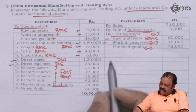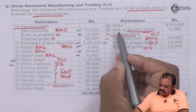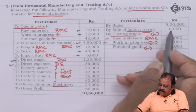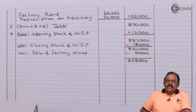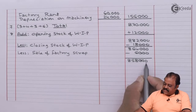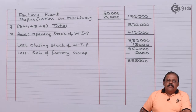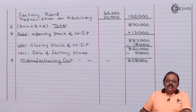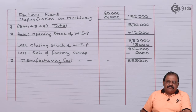From this we deduct sale of factory scrap 6,000, giving us 8,58,000. This is called manufacturing cost, also known as cost of production.